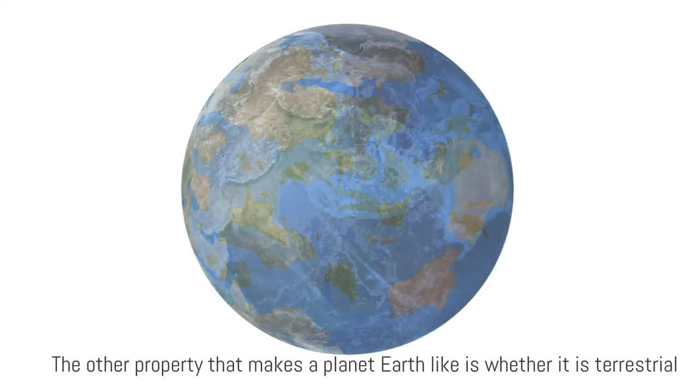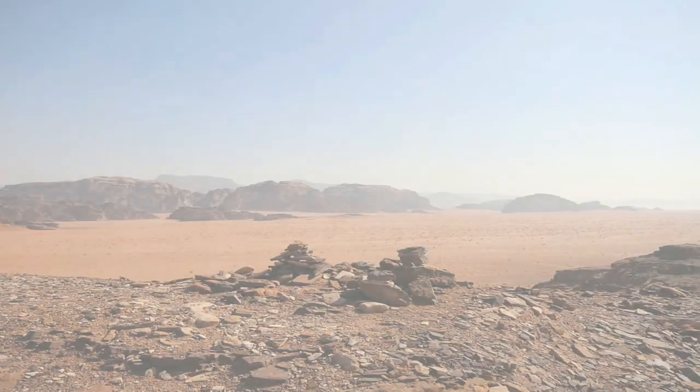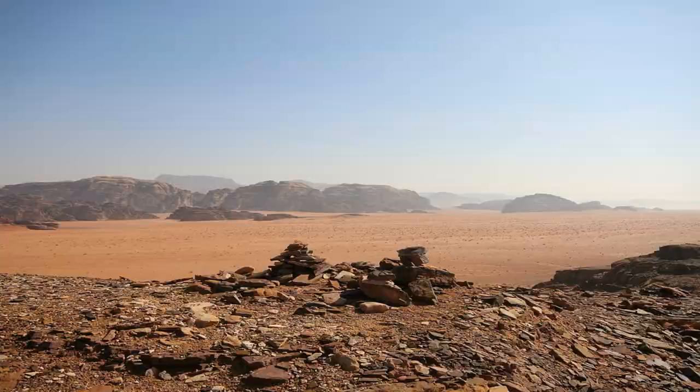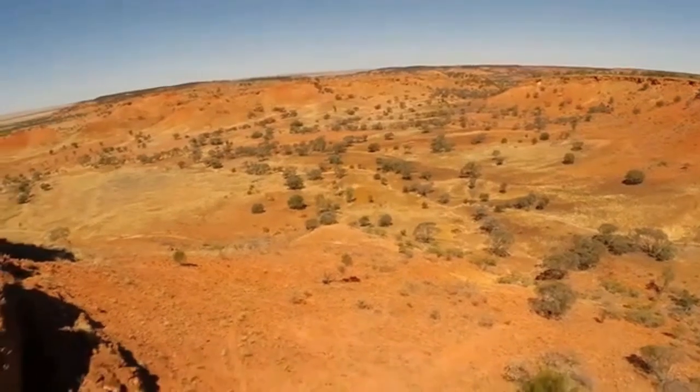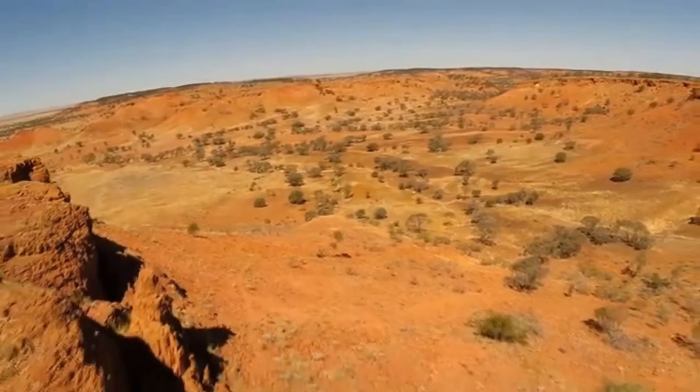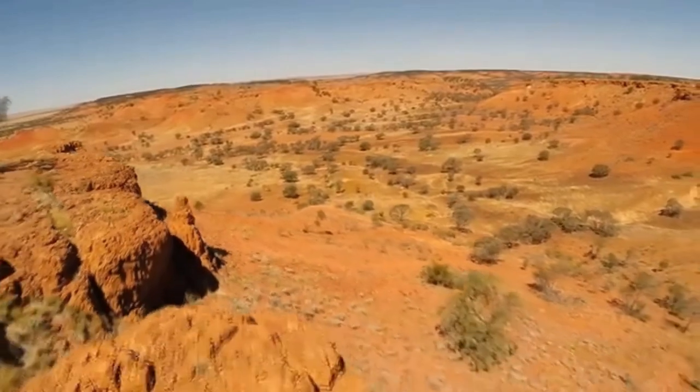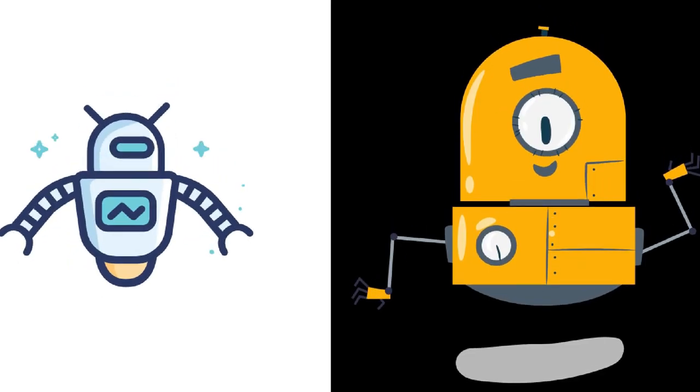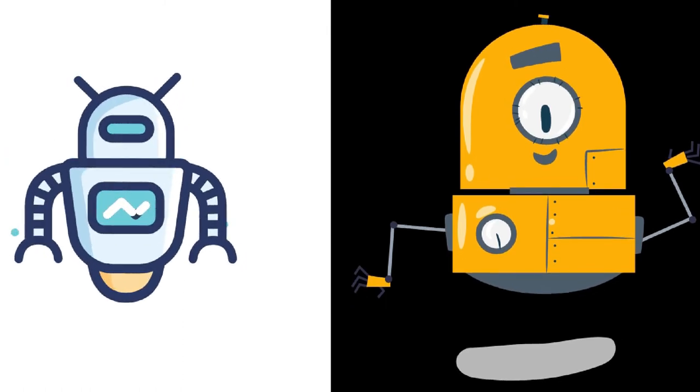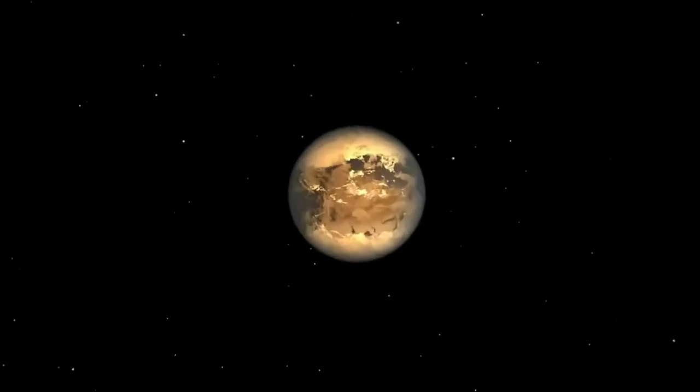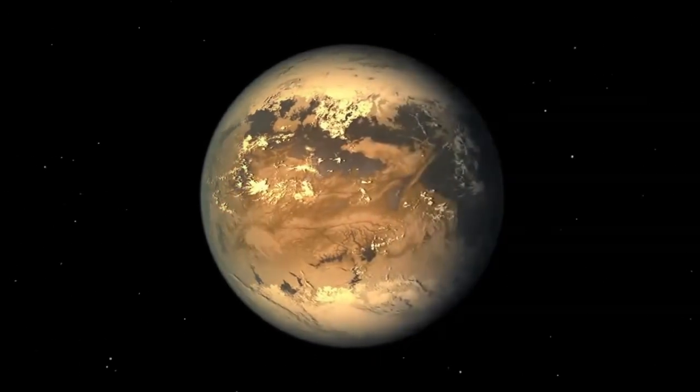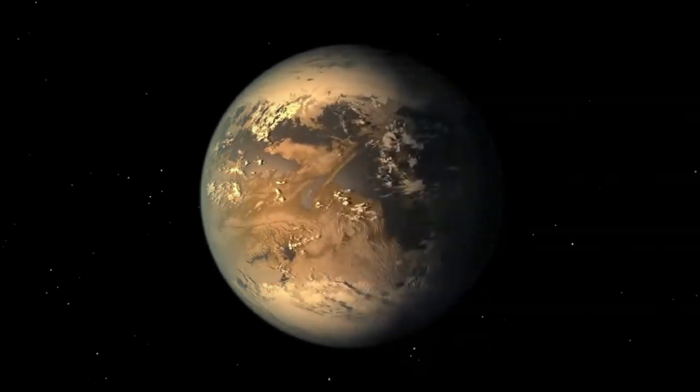The other property that makes a planet Earth-like is whether it is terrestrial. That is, whether it has a surface that is solid made from silicate, rocks and metals. With such geographical features, any terrestrial planet has the capability to be terraformed. That is, we could, through sophisticated techniques, modify the atmosphere and surface ecology in such a way that its environment mimics that of the Earth and supports Earth-like life. An example of that was shown in the 2016 blockbuster The Martian.